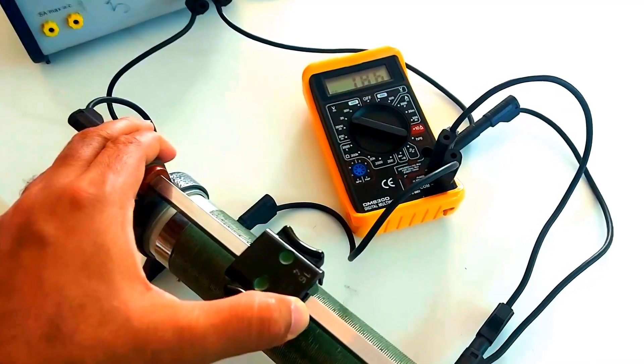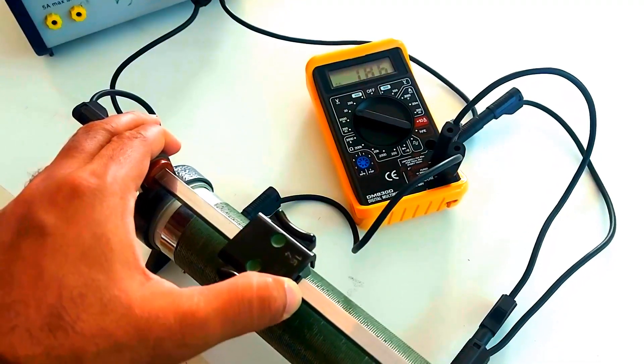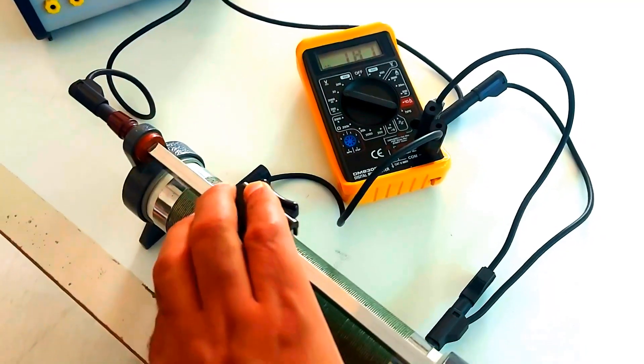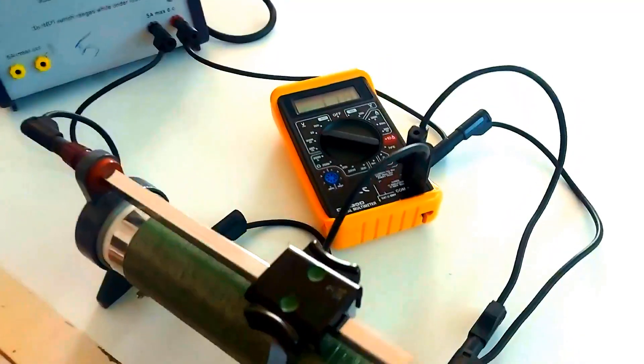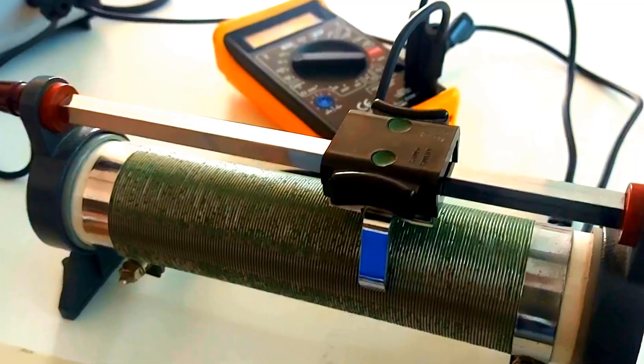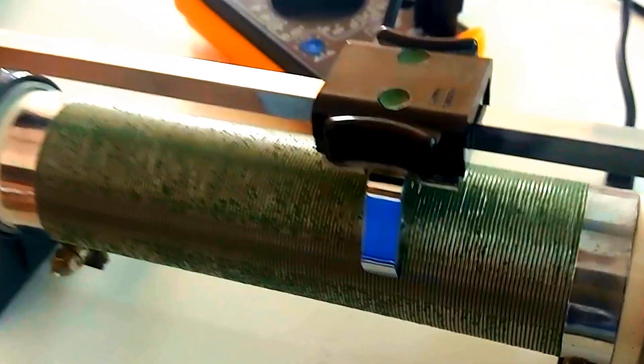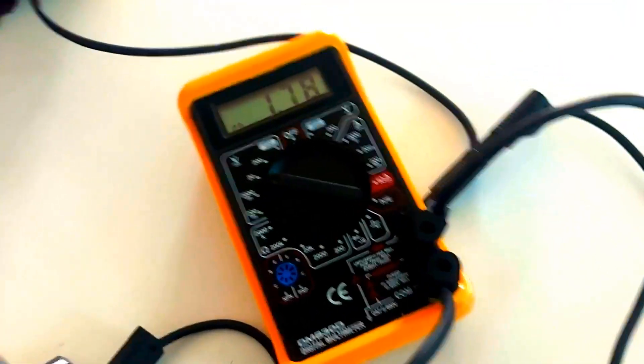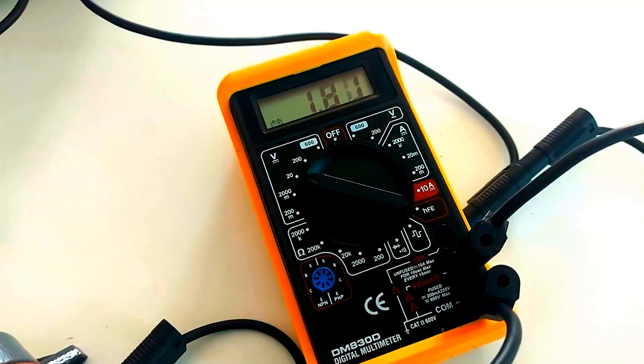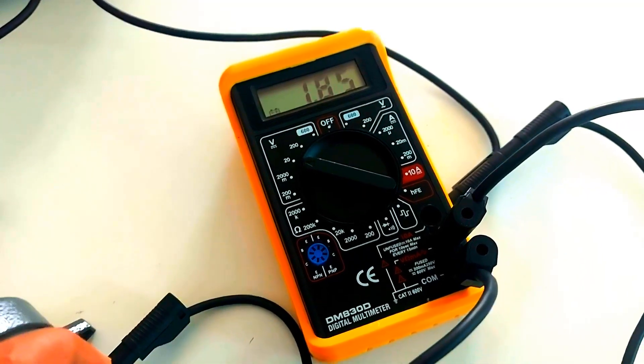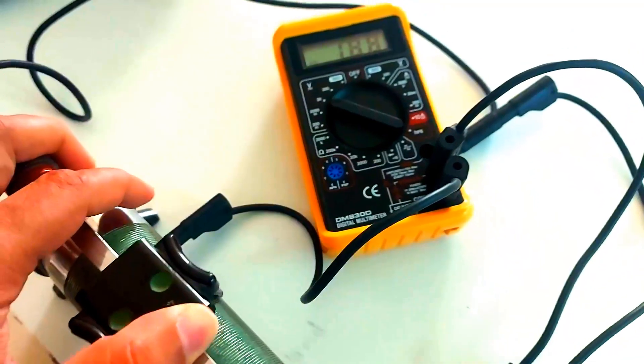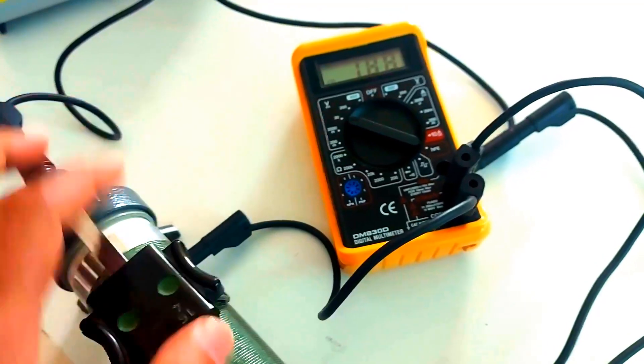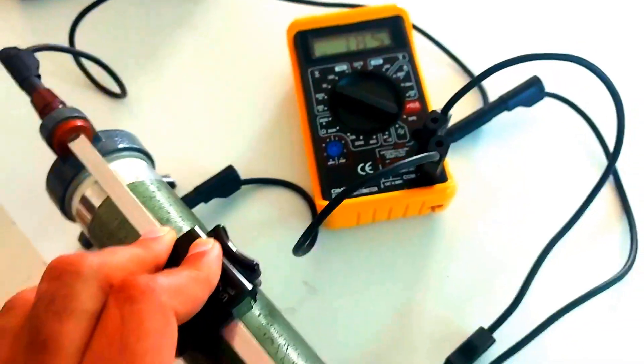This is a rheostat, a type of variable resistor. It has a simple yet effective design. Inside, a long coil of resistive wire is connected to two terminals. But here's the magic part: this sliding contact. Moving it along the wire changes the resistance, which in turn controls the flow of current. Let's see it in action right now.